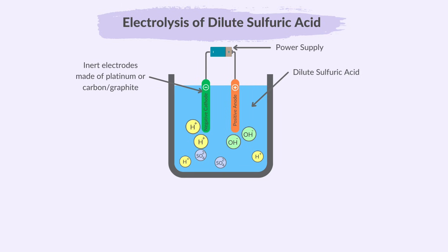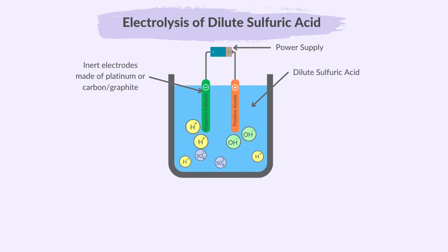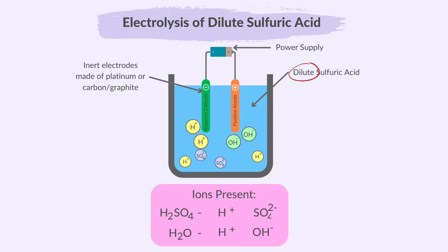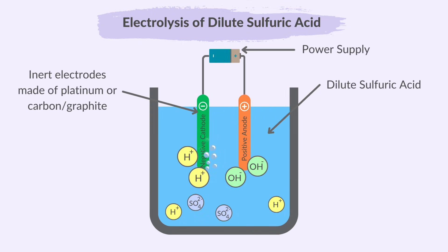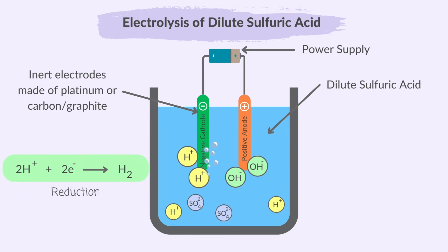Now the electrolysis of dilute sulfuric acid. Remember, inert electrodes made of platinum or carbon graphite are used to avoid their participation in chemical reactions. The ions involved will be H+, OH-, and SO4-. Since there's not really a choice to make at the cathode — it's both H+ cations — hydrogen ions are attracted to the cathode and gain electrons forming hydrogen gas. This hydrogen gas is observed as bubbles evolving at the cathode, so H+ ions are reduced at the cathode.